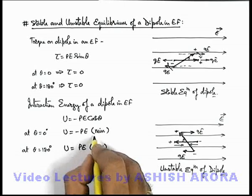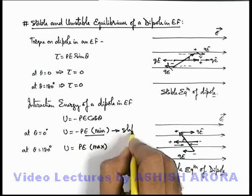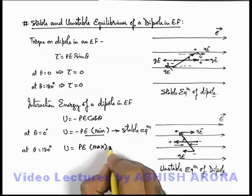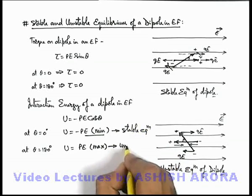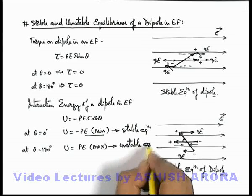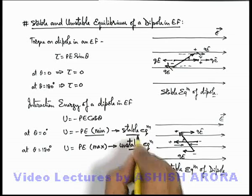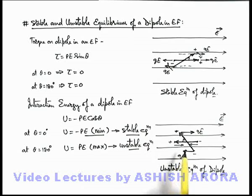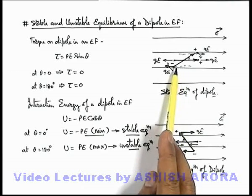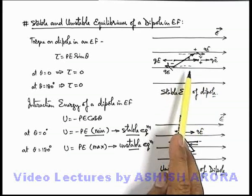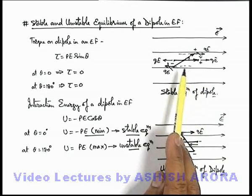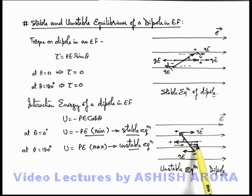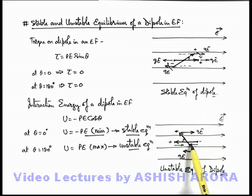We know that potential energy is minimum in the case of stable equilibrium of a system. So always keep in mind: whenever a dipole is placed such that its dipole moment is parallel to the electric field, the dipole is in stable equilibrium for its rotational motion. And if the dipole is placed such that it is anti-parallel to the direction of the electric field, this is the situation of unstable equilibrium of the dipole for its rotational motion.